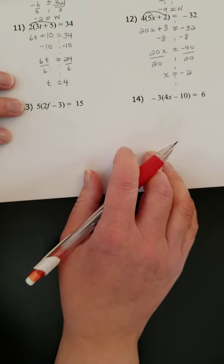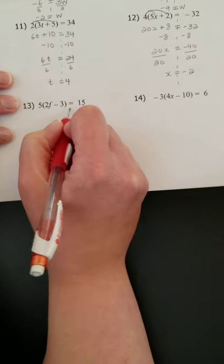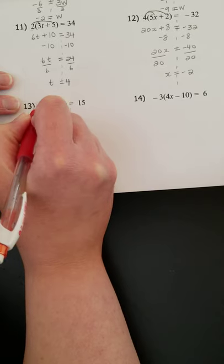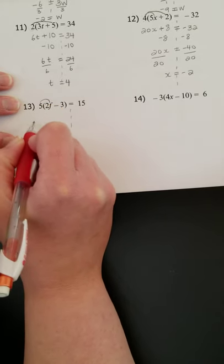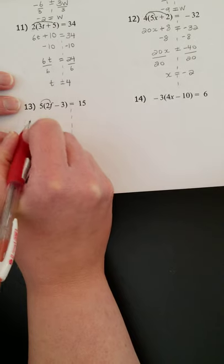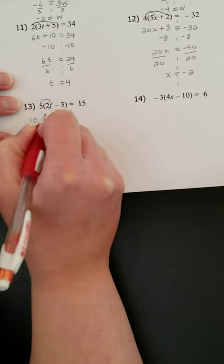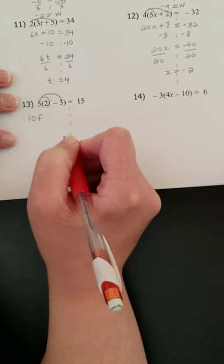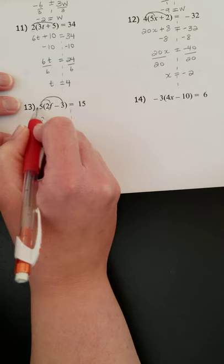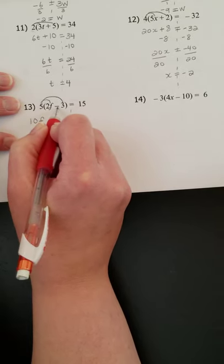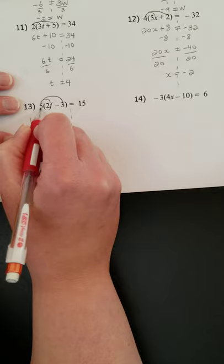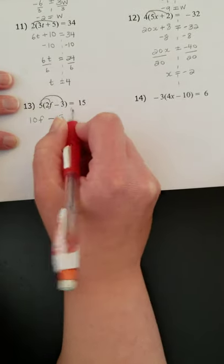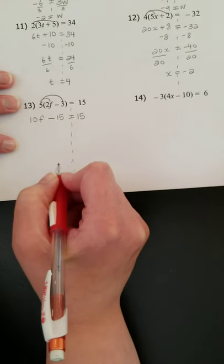Number 13. Again, we're going to distribute first. So we're going to look at five times two F. Positive five, positive two. My answer will be positive. Number parts, five times two is 10. And variable parts, I have an F. The next multiplication, the next piece of this rainbow. Look at your signs. Positive and a negative. That one's different. It's going to make a negative. Number parts, five times three is 15. And variables, there aren't any. So you're done. So equals 15.